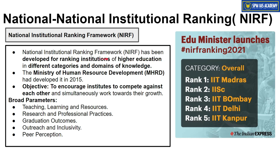The National Institutional Ranking Framework has been developed for ranking institutions of higher education in different categories and domains of knowledge. The Ministry of Education has been publishing this framework since 2015, to give rankings to our country's higher education institutions. The benefit is that it creates a healthy competitive environment among institutions, which is expected to improve higher education standards in the future. Rankings are given on five parameters: teaching, learning and resources; research and professional practices; graduation outcomes; outreach and inclusivity; and peer perception.